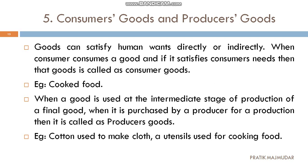For example, you purchase cotton and make clothes from it. Afterwards, you use the clothes — not the cotton itself. So the cotton will be termed as a producer good. I hope you have understood this basic concept related to the types of goods.